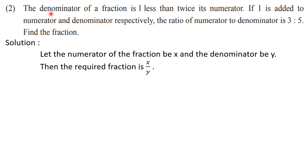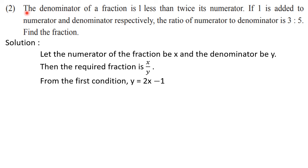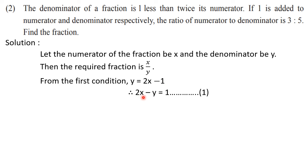Now let us see the two conditions. According to the first condition: the denominator of a fraction — here we break the statement at 'is'. The left-hand side is the denominator, which is y. The right-hand side: 1 less than twice the numerator means 2x − 1. So y = 2x − 1. Converting to standard form (ax + by = c): 2x − y = 1. This is equation 1.